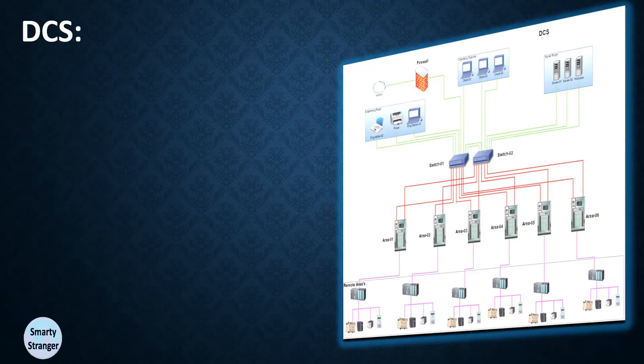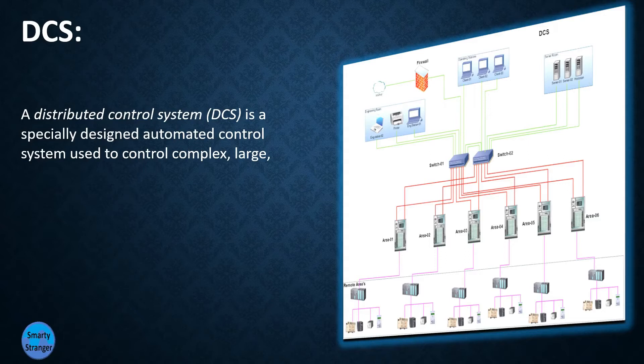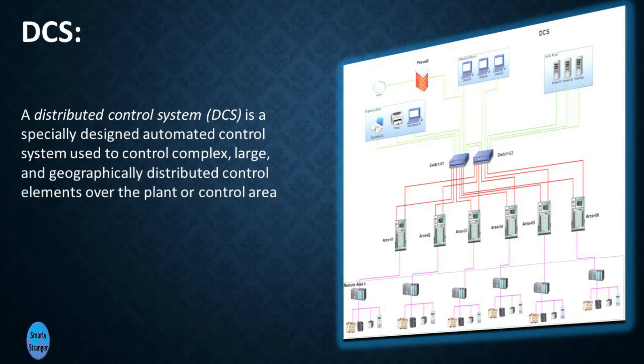DCS—Distributed Control System—is a specially designed automated control system used to control complex, large, and geographically distributed control elements over the plant or control area.